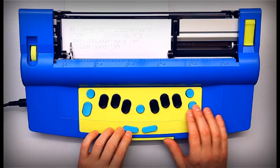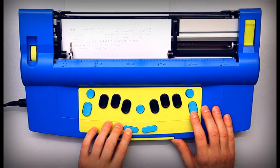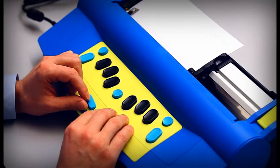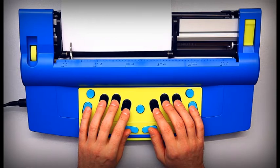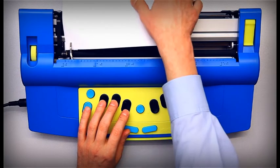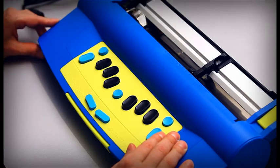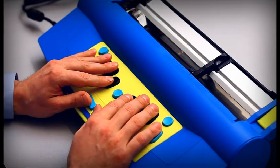When your work is done, your Mountbatten will eject the paper for you after you press New Line and Enter. Switch your Mountbatten off to conserve the battery so that the unit is ready when you need it next time.